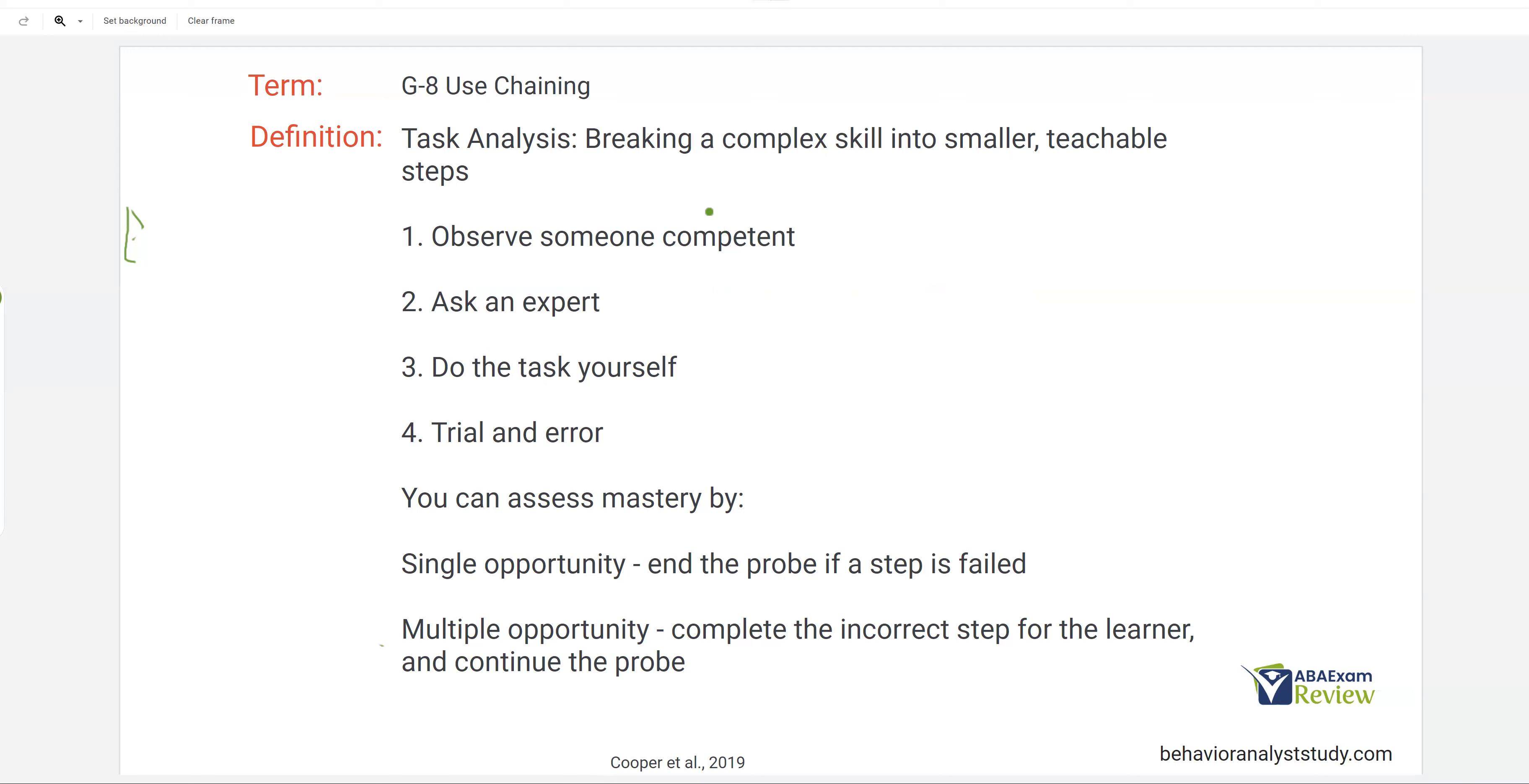And so now we have our analyses, right? We've broken the complex skill into teachable steps. How do we assess mastery? Because now we're going to teach using a chain. But we can assess mastery of the skill a couple of different ways. We can use single opportunity where we're going to end the probe if the step has failed. Meaning if I have a chain that has four steps and my learner fails step number three, well, we're going to end the probe here. But if we use multiple opportunities and we had one, two, three, four steps and the learner failed three, well, we would complete that step for them and push through to number four. Either way is acceptable.